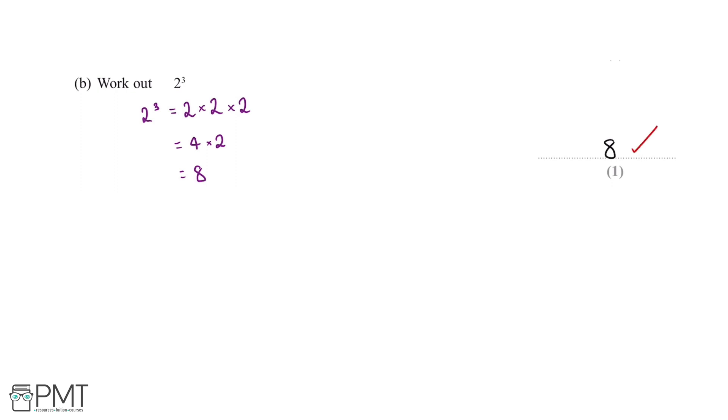Write brackets in this statement to make it correct: 7 multiplied by 2 plus 3 equals 35. As before, we'll need to remember our BODMAS rules.